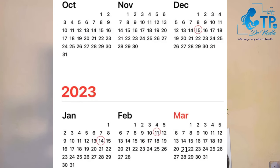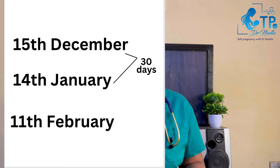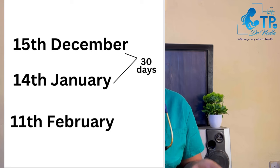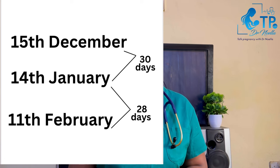Now, the 14th of January is day one of the next cycle, so your previous cycle ends on the 13th of January. Counting from December 15th as day one up to January 13th gives you 30 days. Then starting January 14th as day one, count up to February 10th — that gives you 28 days. So you can see that your cycle is fairly steady.